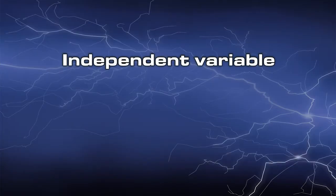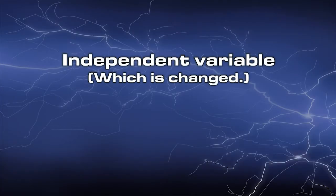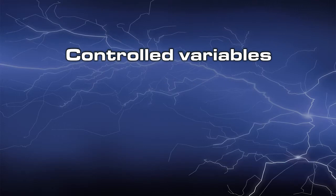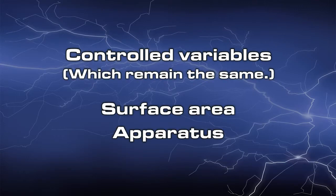Our variables are, the independent variable which is changed is the angle of the slope, the dependent variable which is measured is the static friction, and the controlled variables which remain the same are the surface area and the apparatus.